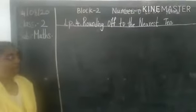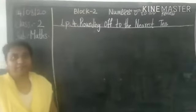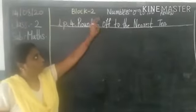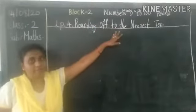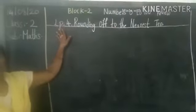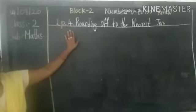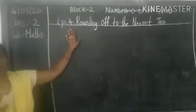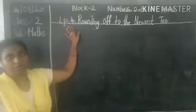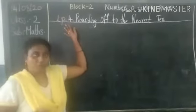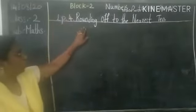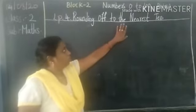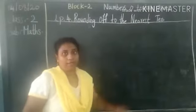Hello children, today I am going to teach you second class maths in block 2, number 0 to 100 review, last LP 4 children. LP 1, LP 2, LP 3 finish. LP 4 children so that we can complete our block 2. This is rounding off to the nearest 10.